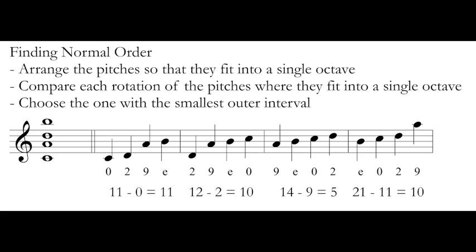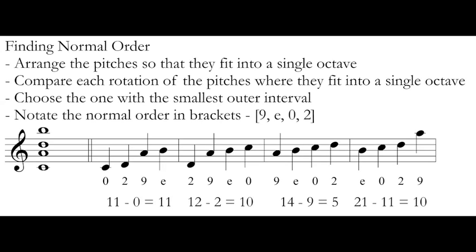For normal order, I'm looking for the grouping that has the smallest, and here that is very easily 5, my third grouping of A, B, C, D. Just looking at this pitch class set, we can see that one is very clearly the smallest. They're all steps between those pitches. We notate normal order in brackets. I've written out each of my pitch classes in ascending order, separated with commas. Here normal order is 9, 11, 0, 2.